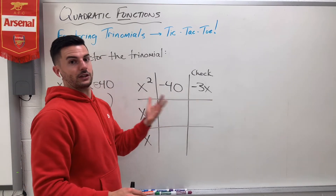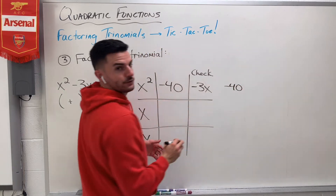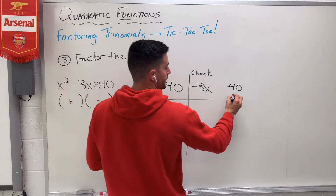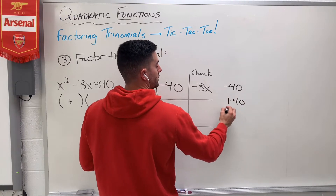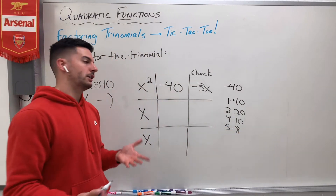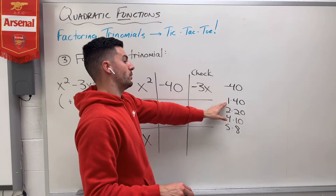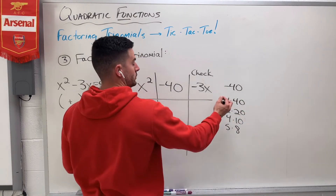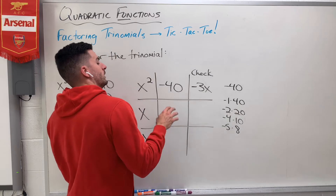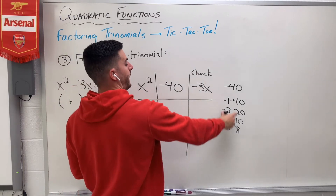Then I try to fill in the second column — what multiplies to give me negative 40. Negative 40 is a bigger number, so there are lots of factors, but it's almost easier to ignore the negative at the start and just list factors of 40: 1 times 40, 2 times 20, 4 times 10, 5 times 8. Those all multiply to give me positive 40. But because we have a negative, one of these numbers needs to be negative. If you use this check number to guide your factor picking, that can be really helpful.